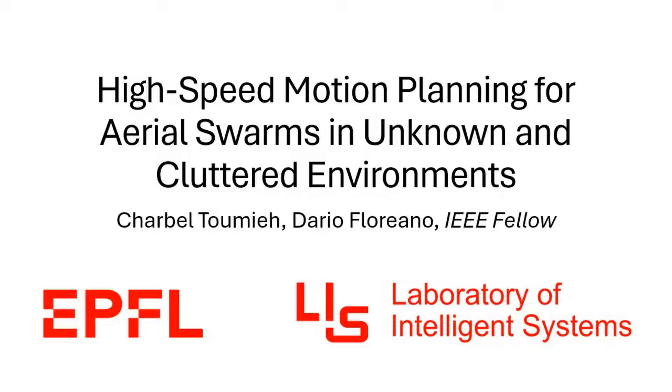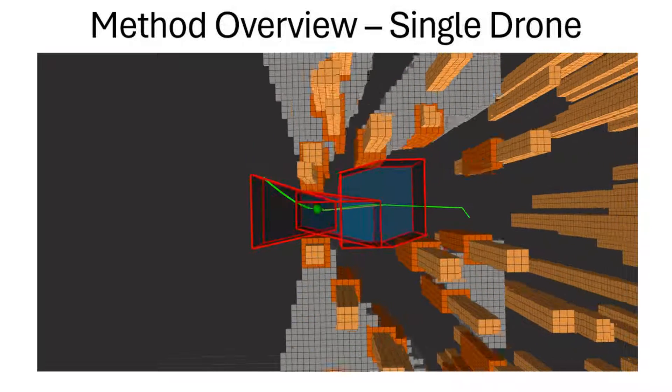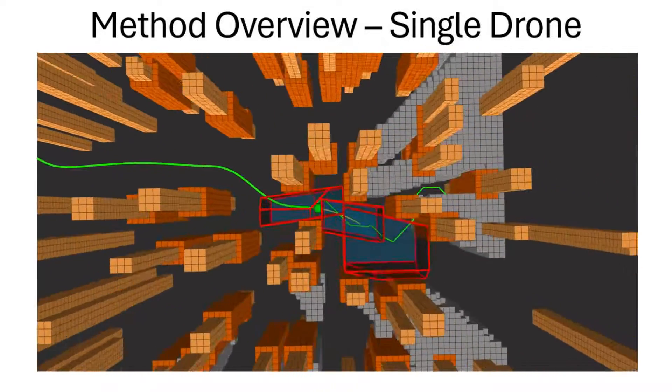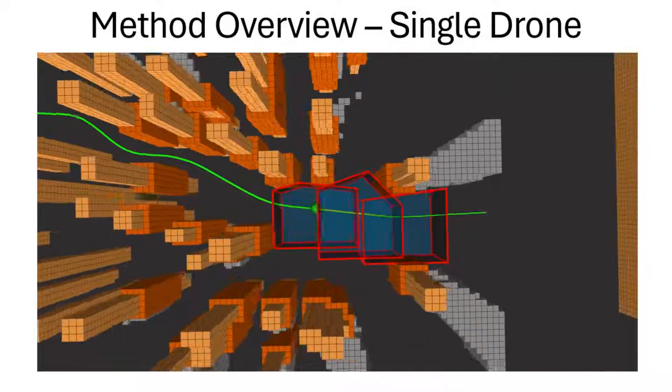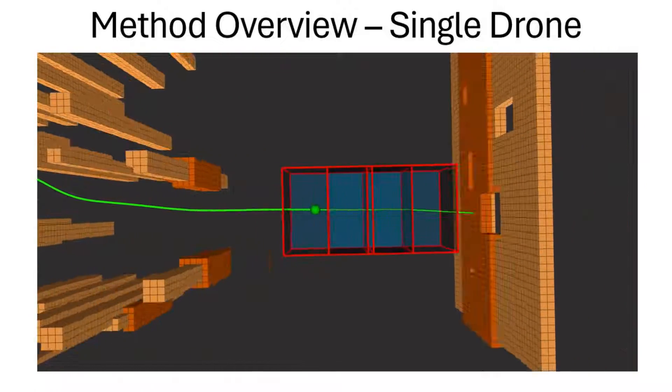In this work, we propose a novel high-speed motion planner for aerial swarms in unknown and cluttered environments. The framework continuously maps the environment as it navigates through it and plans trajectories based on the last update from sensory measurements.